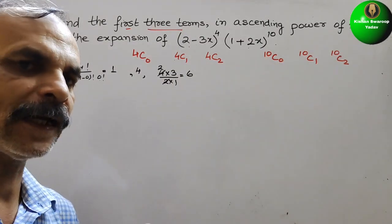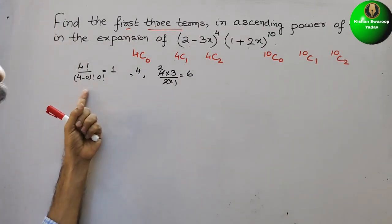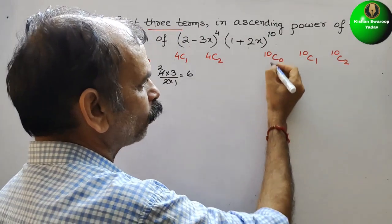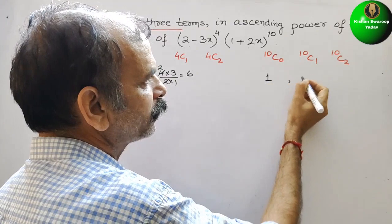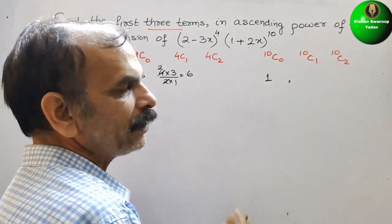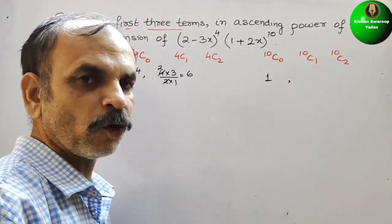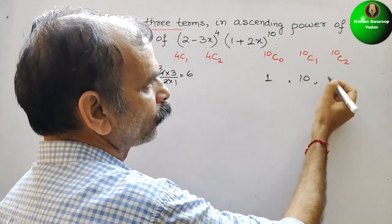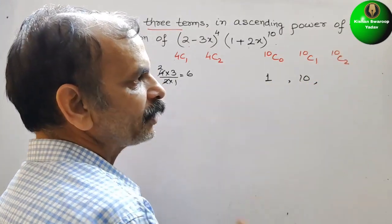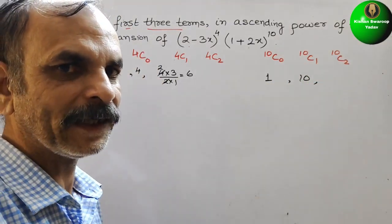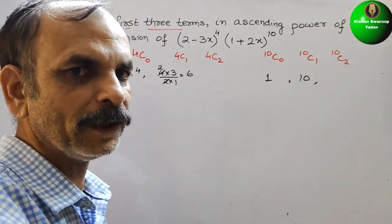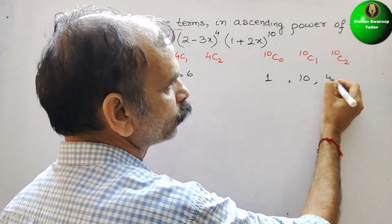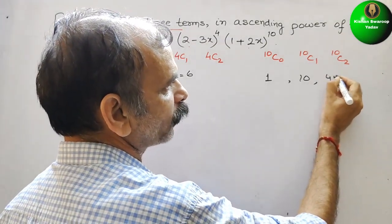For the second bracket: 10C0 is 1. 10C1 is 10. And 10C2 is 10 into 9 divided by 2, which equals 45.